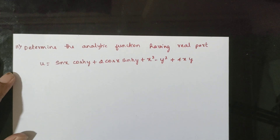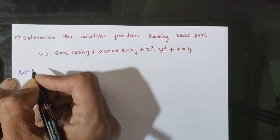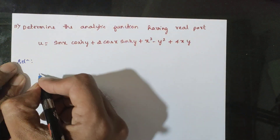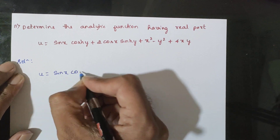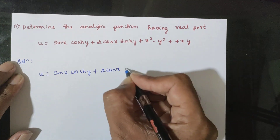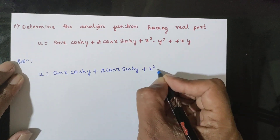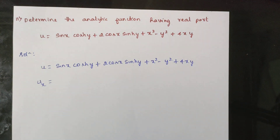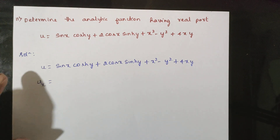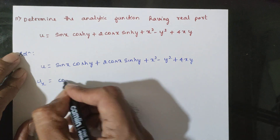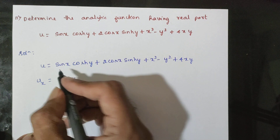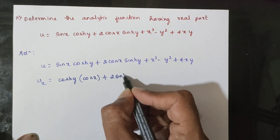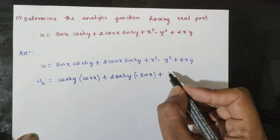Next problem: determine the analytic function having real part u = sinx·coshy + 2cosx·sinhy + x² - y² + 4xy. We compute Ux: differentiating with respect to x gives Ux = cosx·coshy - 2sinx·sinhy + 2x + 4.